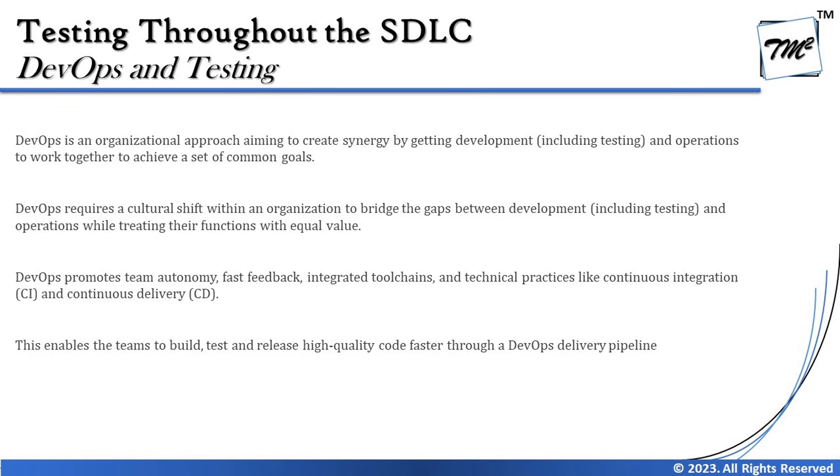DevOps requires a cultural shift within an organization to bridge the gaps between development — which again includes testing — and operations, while treating their functions with equal value. DevOps promotes test autonomy, fast feedback, integrated tool chains, and technical practices like continuous integration and continuous delivery. Every time a developer checks code into the repository, that check-in should trigger a build verification test and many other activities like static analysis, unit test cases, or a regression test suite — automatically, step by step — to make sure the new unit is working fine and when integrated with the existing code, it does not introduce regressions.